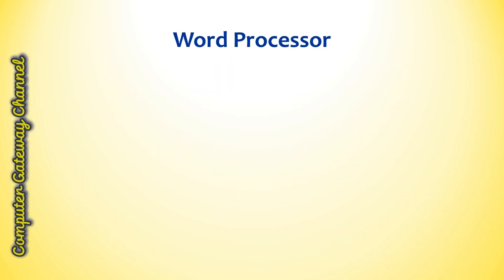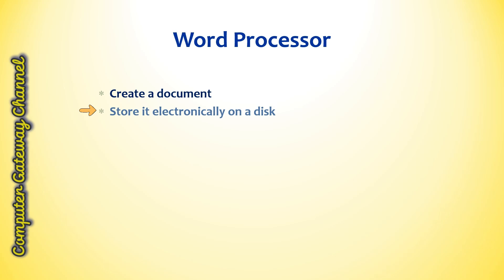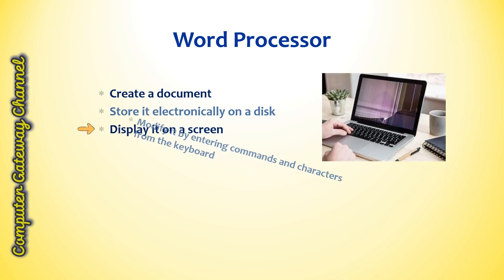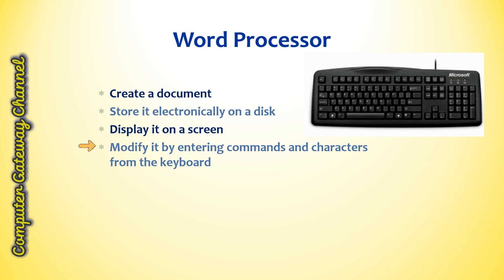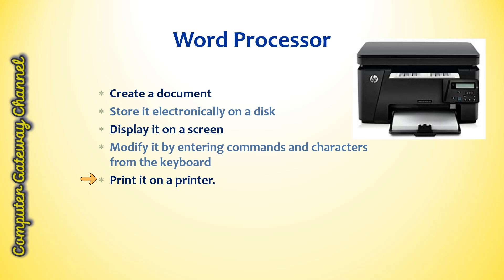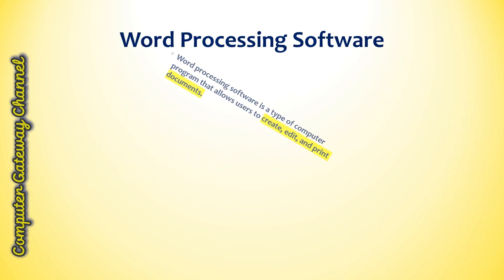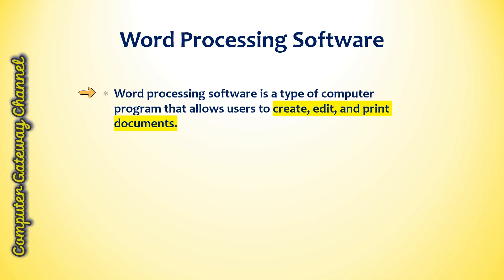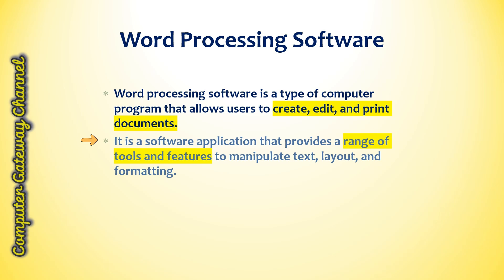Before I start my tutorial on word processing software, you should know what a word processor is. A word processor enables you to create a document, store it electronically on a disk, display it on a screen, modify it by entering commands and characters from the keyboard, and print it on a printer. Word processing software is a type of computer program that allows users to create, edit and print documents. It is a software application that provides a range of tools and features to manipulate text, layout and formatting.